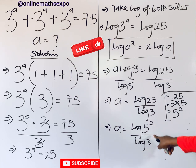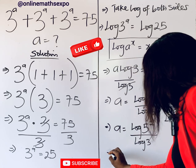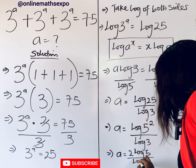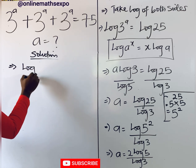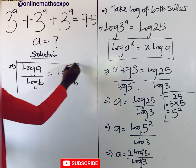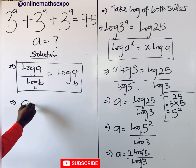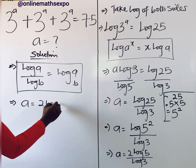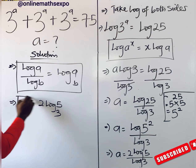Remember, this 2 is the power, so according to the log power rule it multiplies the log. This gives us a is equal to 2·log(5) divided by log(3). Now remember the change of base rule: log(a) divided by log(b) is log base b of a. Applying this, a is equal to 2·log₃(5). This becomes the value of a.